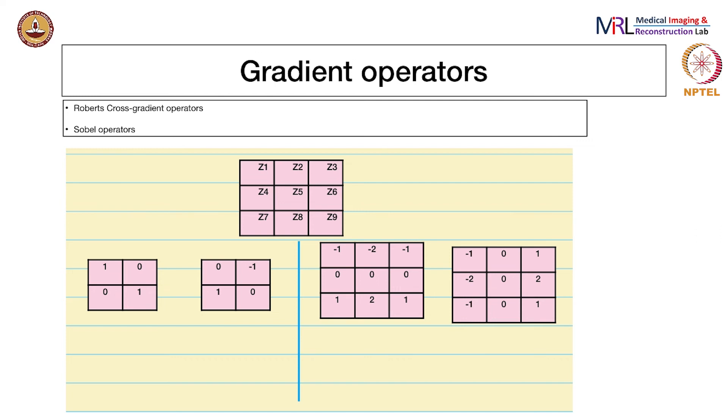Here are some of the more commonly used operators. The Roberts cross gradient operators are given by these two kernels - one for one component, the other for the other component, GX and GY. Similarly, these are Sobel operators. These are the Roberts cross gradient operators, and these are the Sobel operators. You can apply these onto images and write down the expression for the output in terms of the Zs.